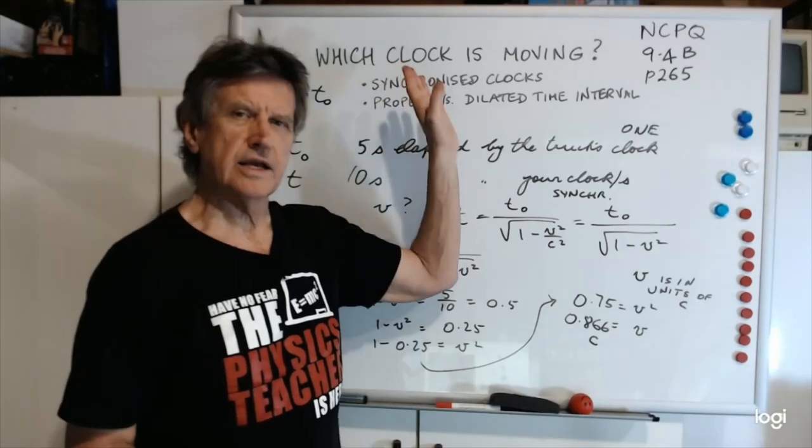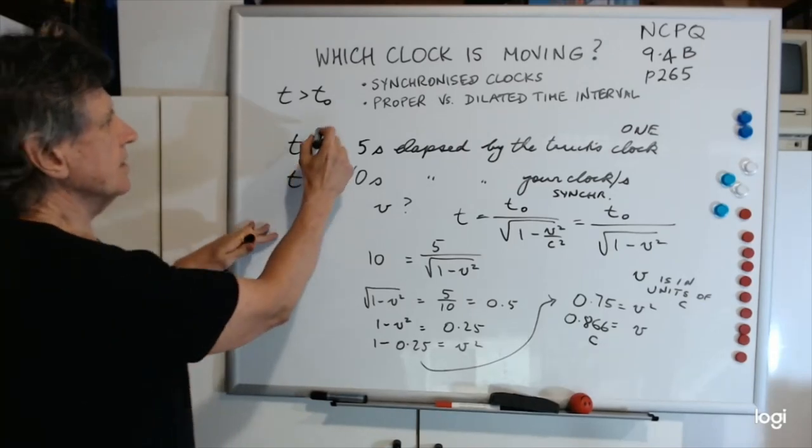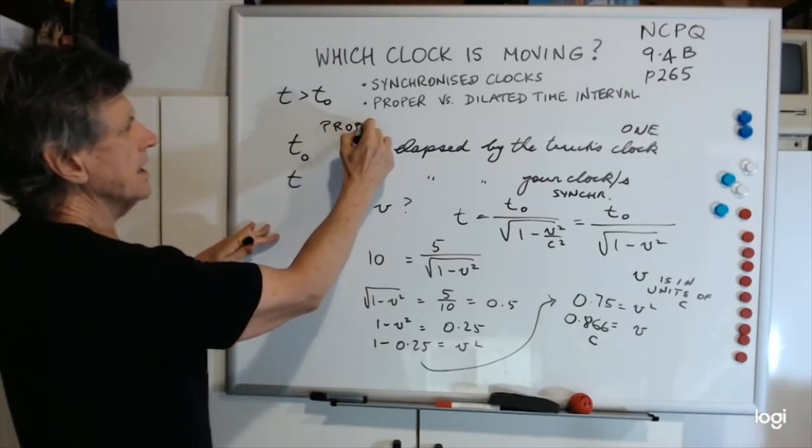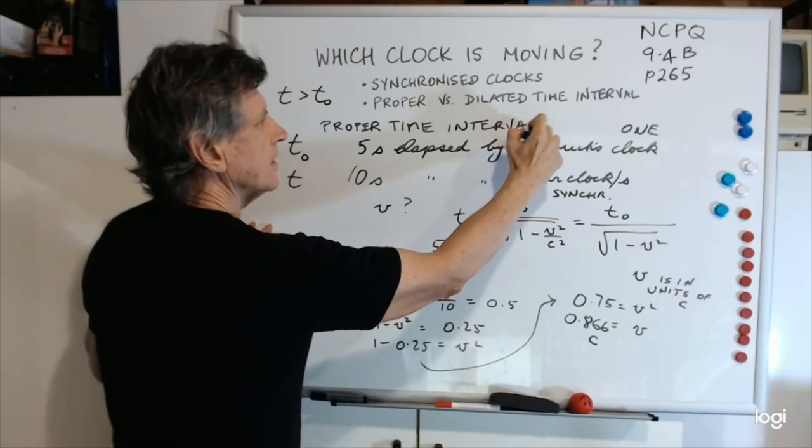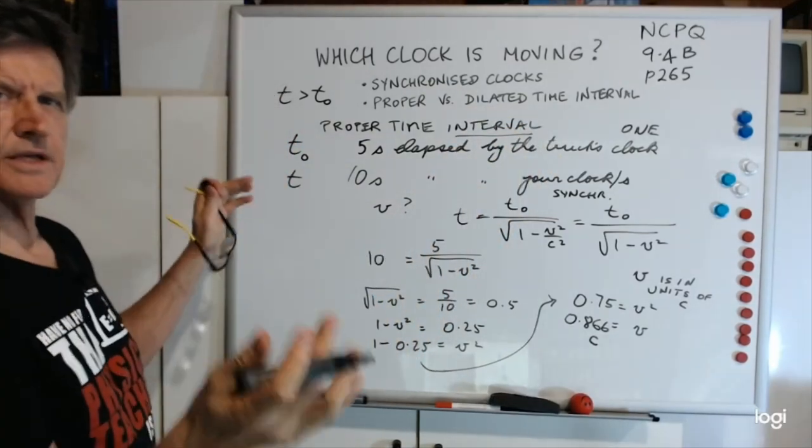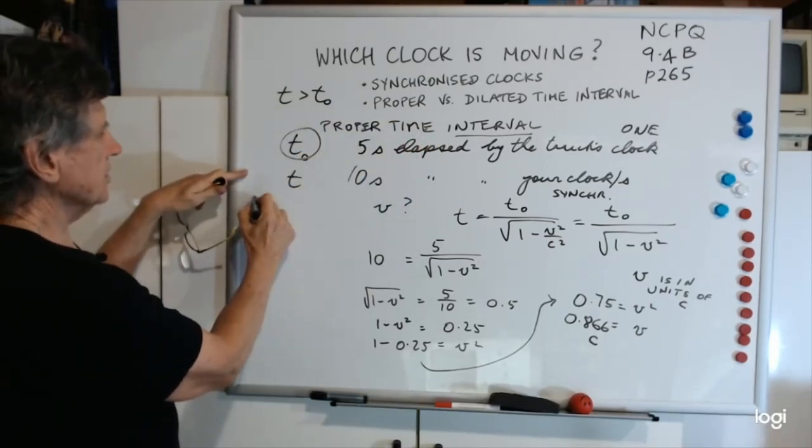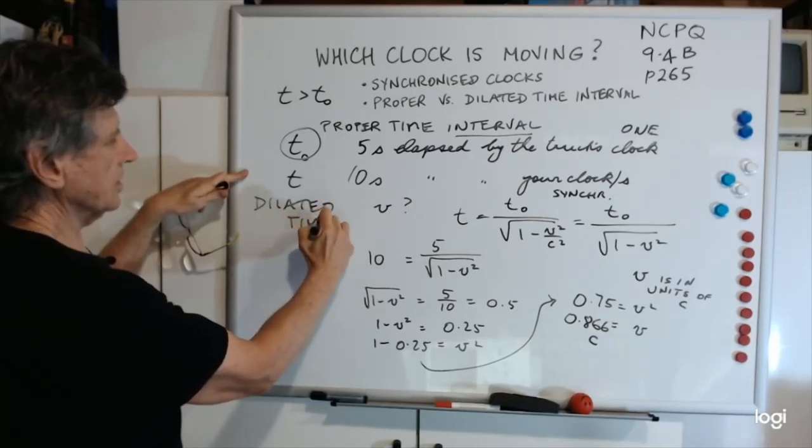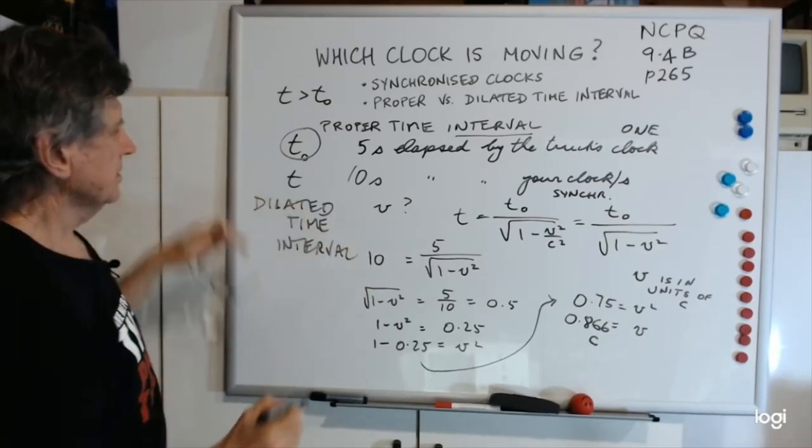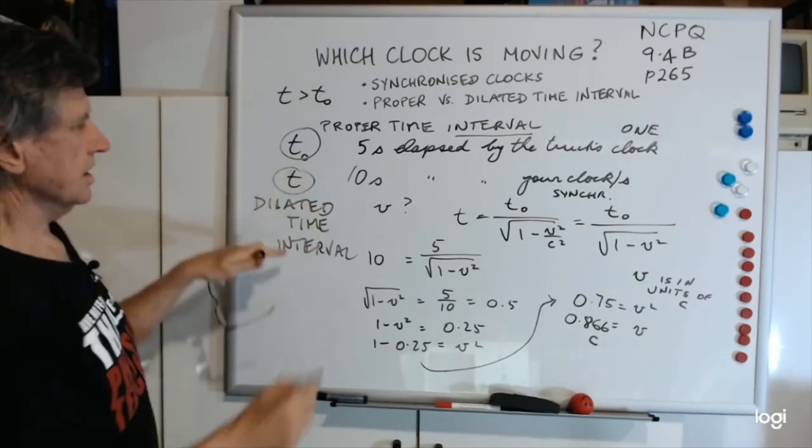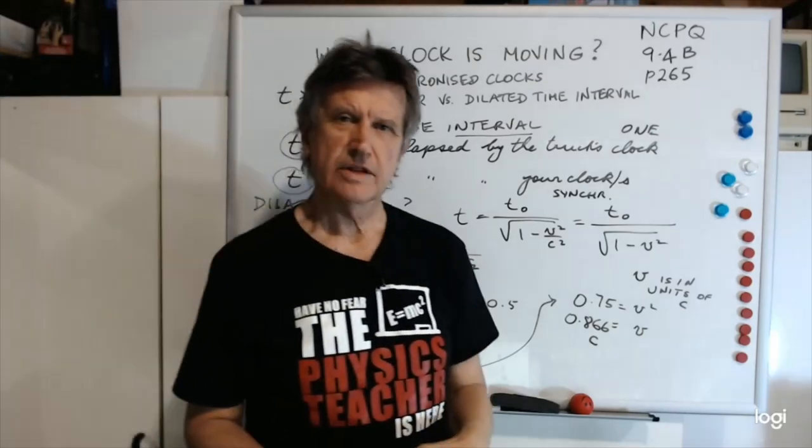I might leave it at that. That's basically establishing which clock is moving. And I told you before that T0 is called proper time or proper time interval. It should be proper time interval. So that's T0. And this is called dilated time or dilated time interval. That's T, the dilated time interval. So I've covered this proper versus dilated time interval, and I've told you about synchronized clocks. We'll leave it there. Thank you.